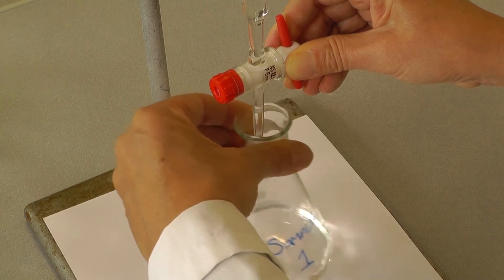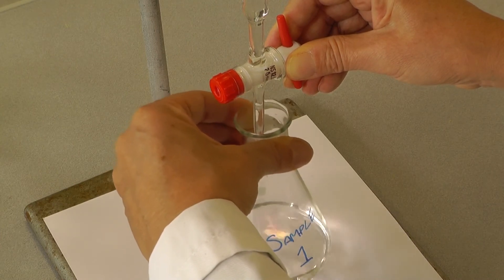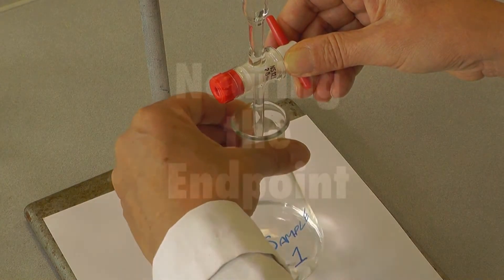As soon as you notice any difference in colour, either a colour fading or a colour change, close the tap and swirl vigorously.